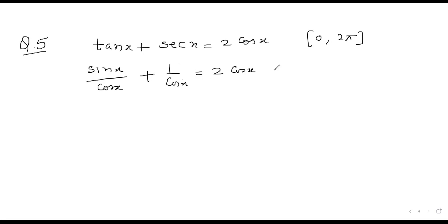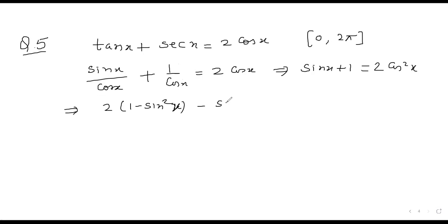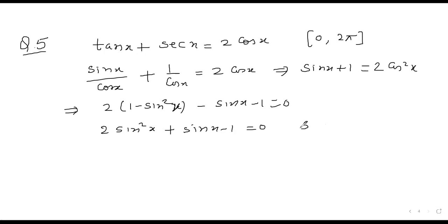Taking LCM, sin x + 1 = 2cos²x, which can be written as sin x + 1 = 2(1 − sin²x). Rearranging gives 2sin²x + sin x − 1 = 0.